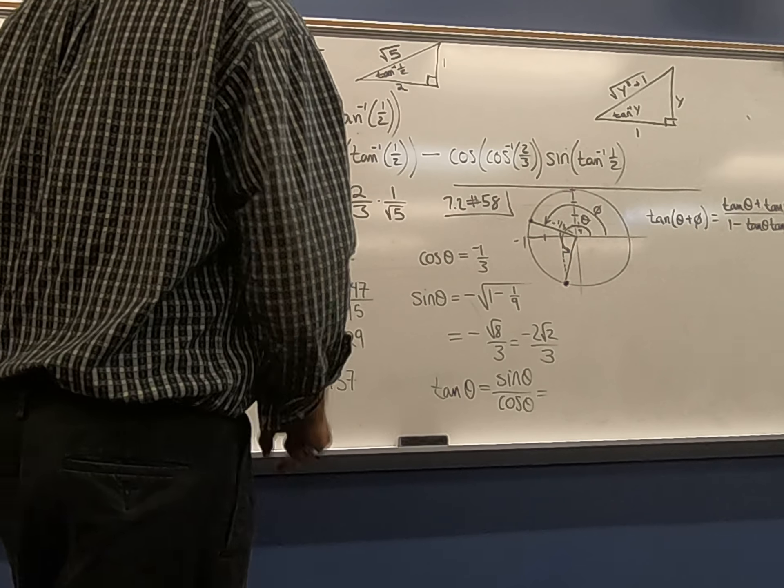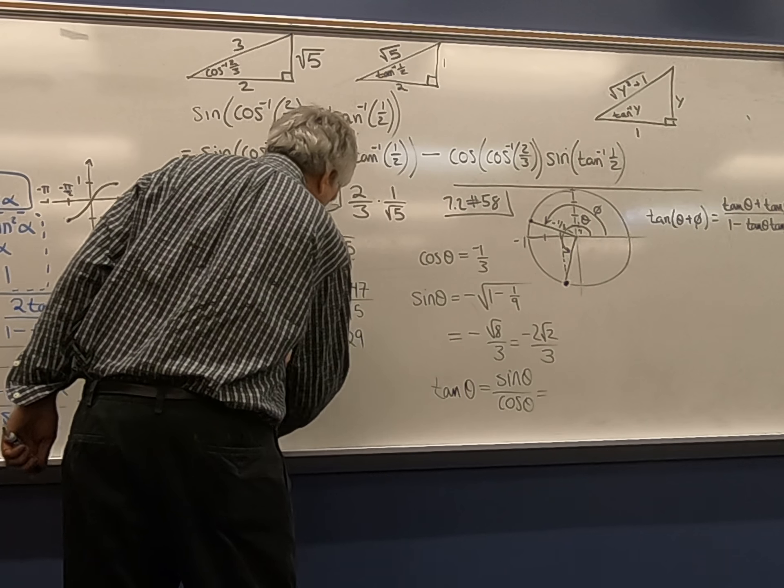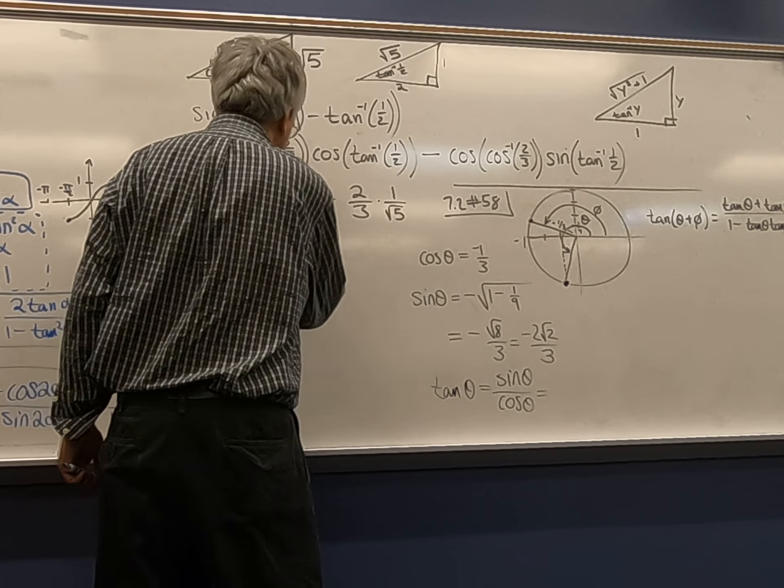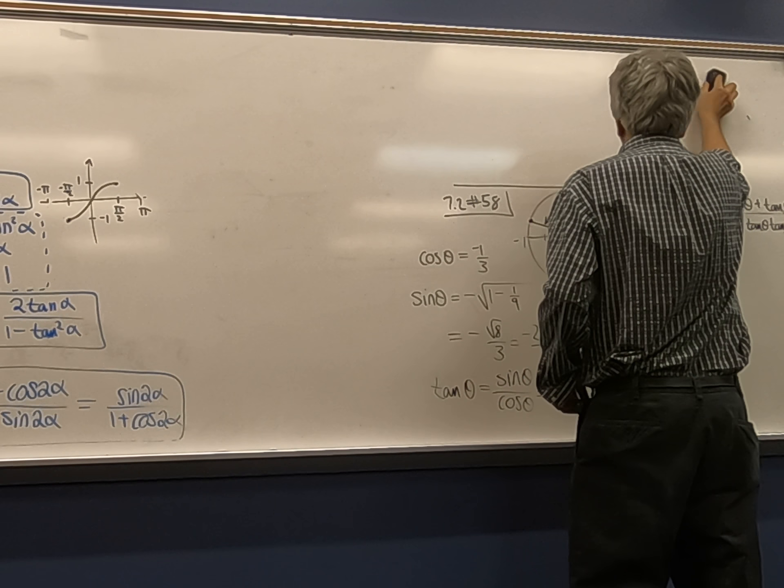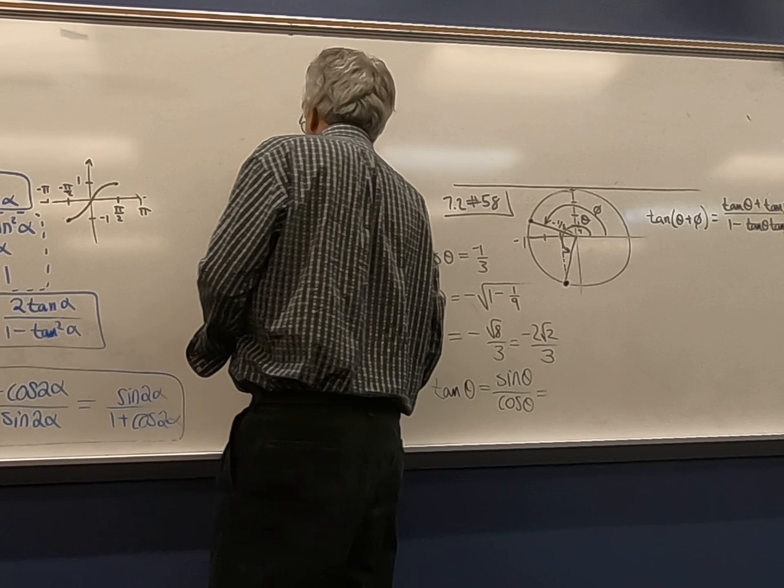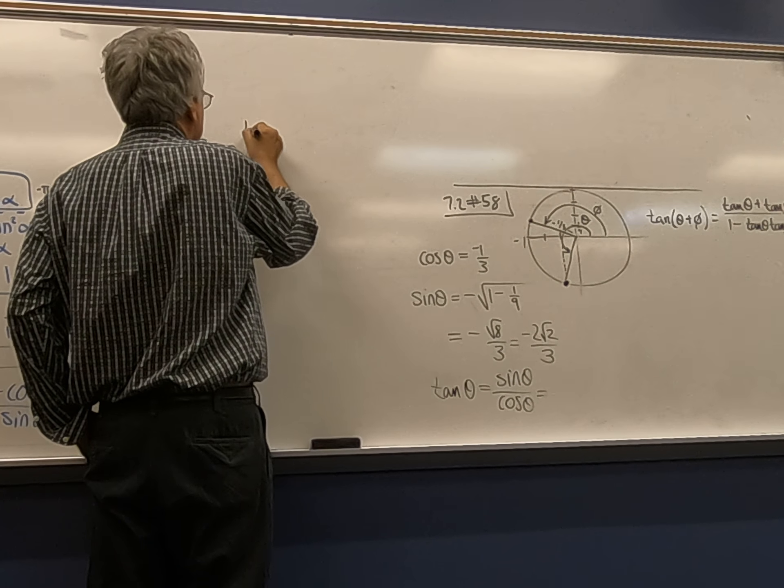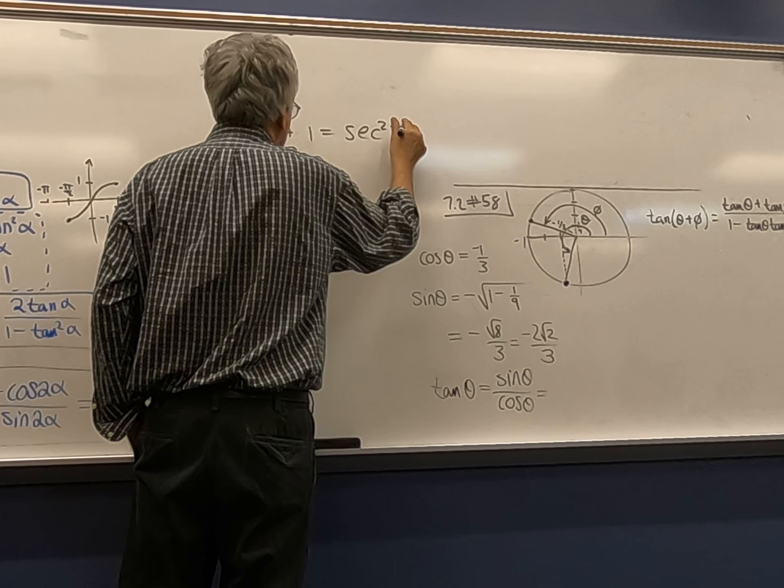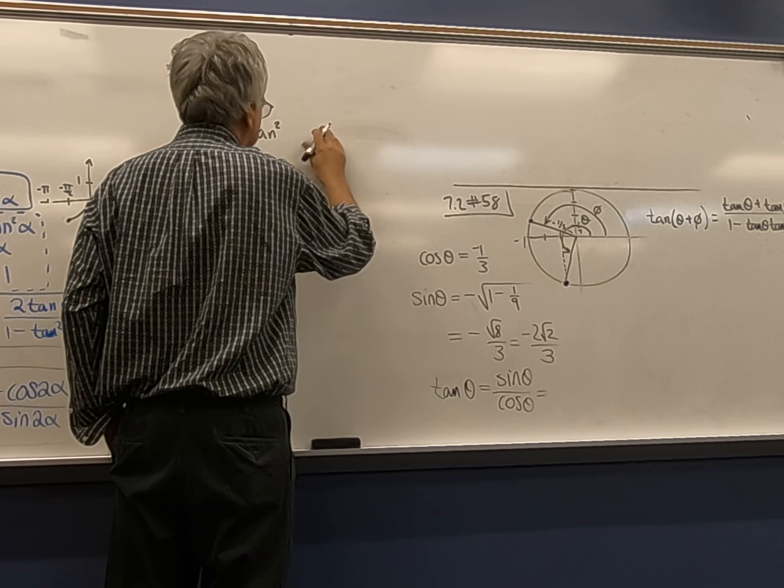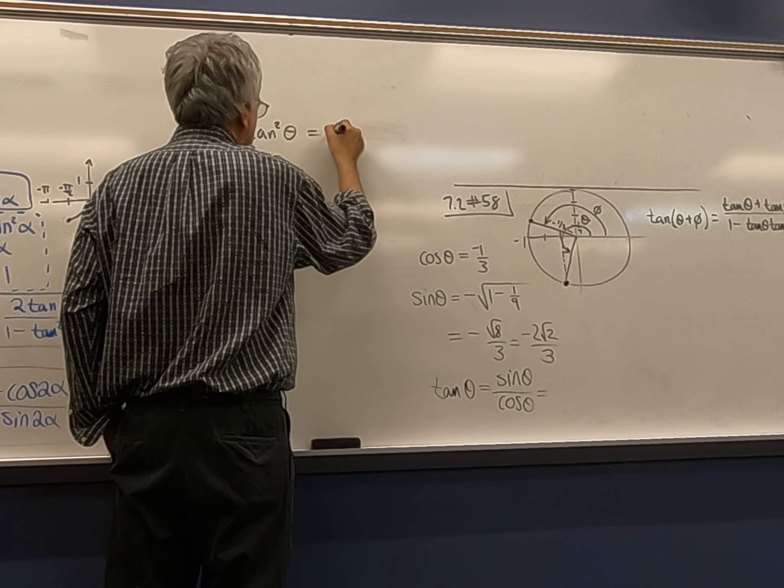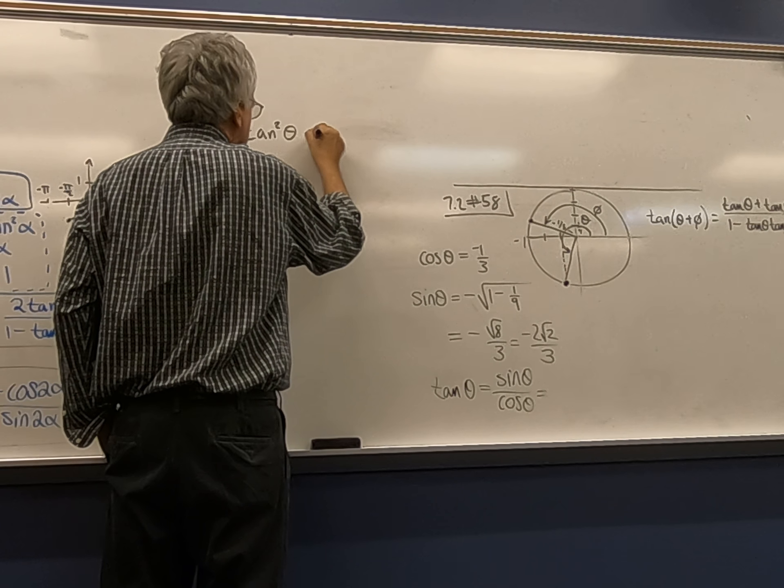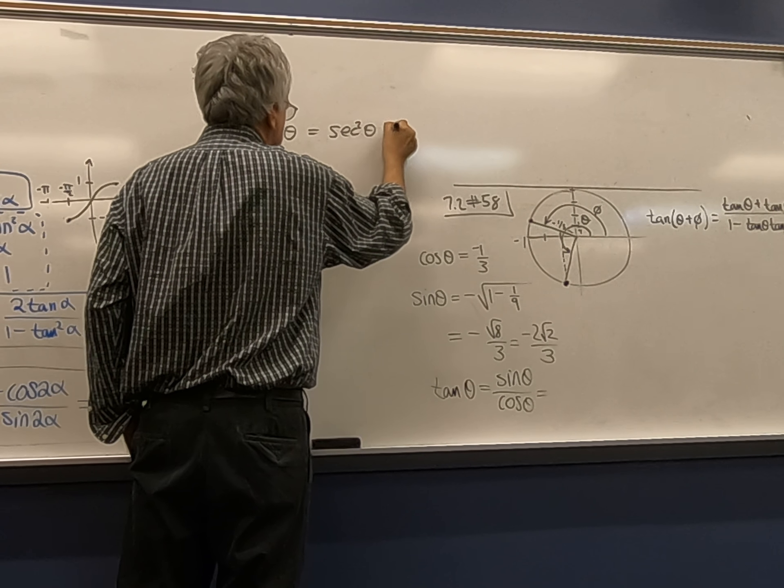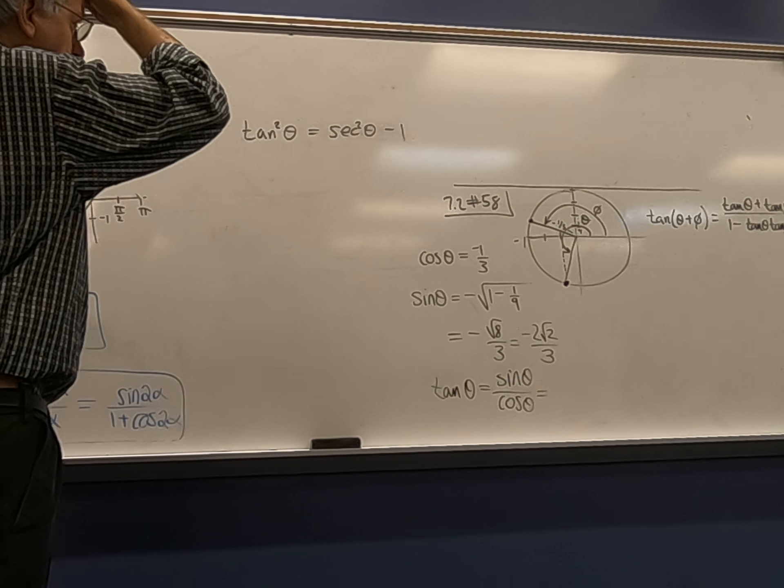There's another approach to this. Let me erase the rest of this so I can use the space here. The other approach is to use the other identity, which may be actually even easier, right? What's the other identity? Well, tangent squared plus one is equal to secant squared. Sorry, I should not implement the argument. Plus one. Well, so it's equal to secant theta minus one, right? That's one form of the Pythagorean identity.